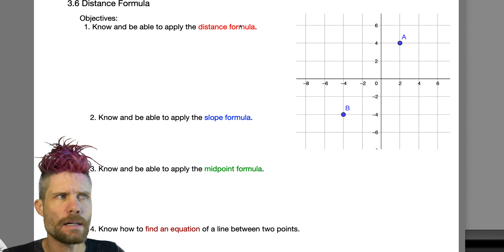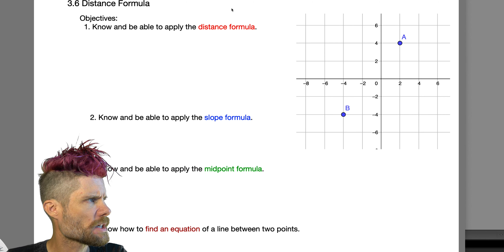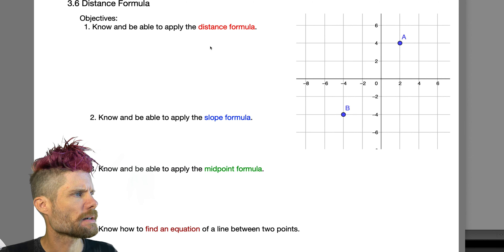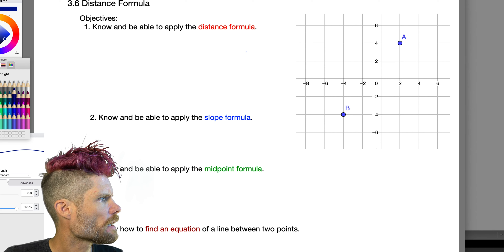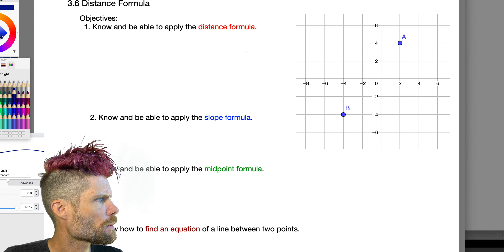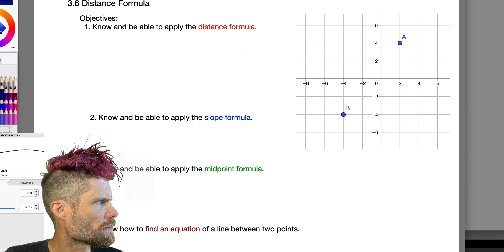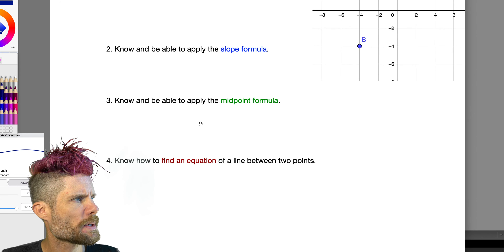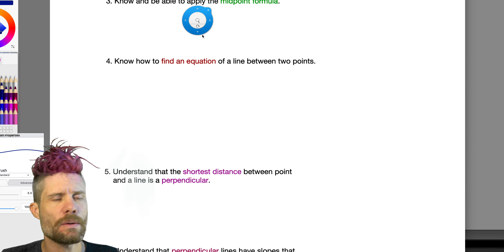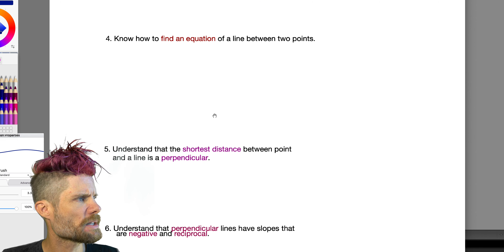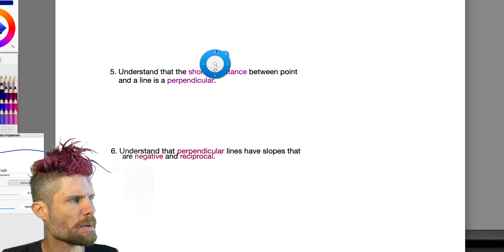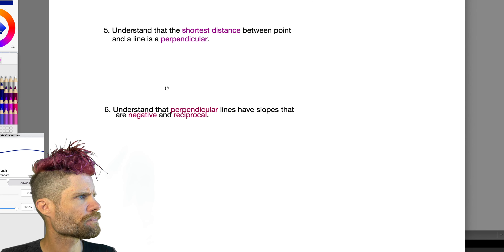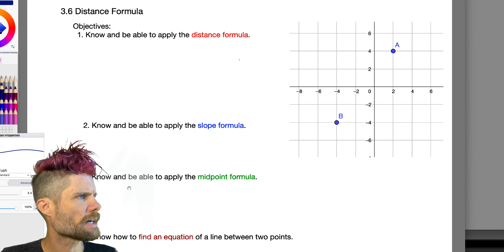Hey everybody, Mr. Mack here. We're going to do a study review on section 3.6, the distance formula — there's a quiz coming up in a couple of days. Our main objectives for this unit are to know and apply the distance formula, slope formula, and midpoint formula; find the equation of a line between two points; understand that the shortest distance between a point and a line is perpendicular; and understand that perpendicular lines have slopes that are negative reciprocals.